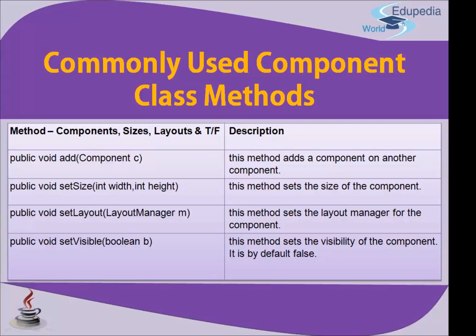Next is public void setSize(int width, int height). Sometimes setbounds is also used for sizing buttons, forms, and so on. This method sets the size of the component — for example, the x-axis might be 100 and the height 50 or 40. This method sets the size of the component in both x and y directions.